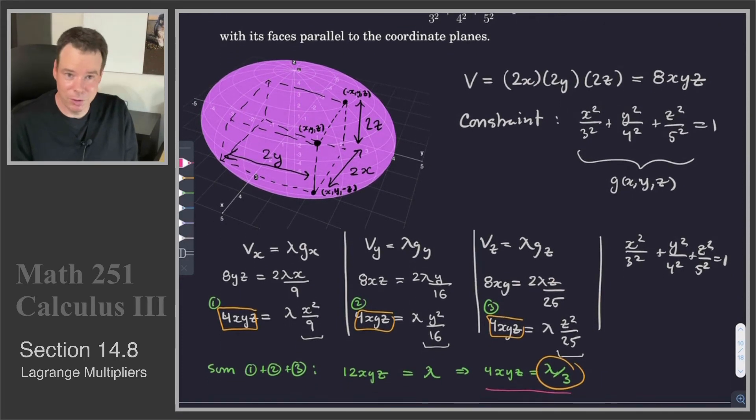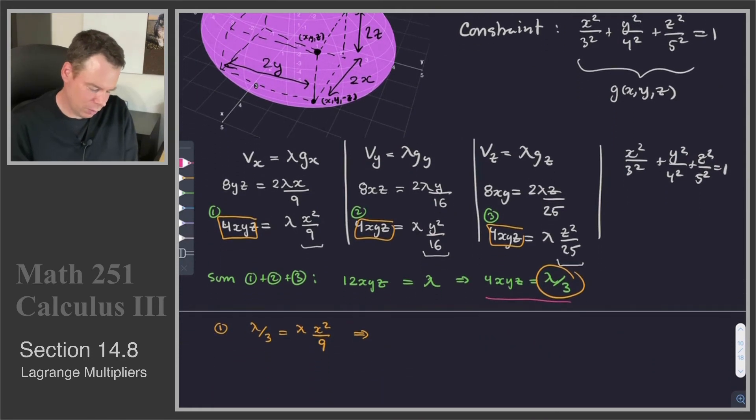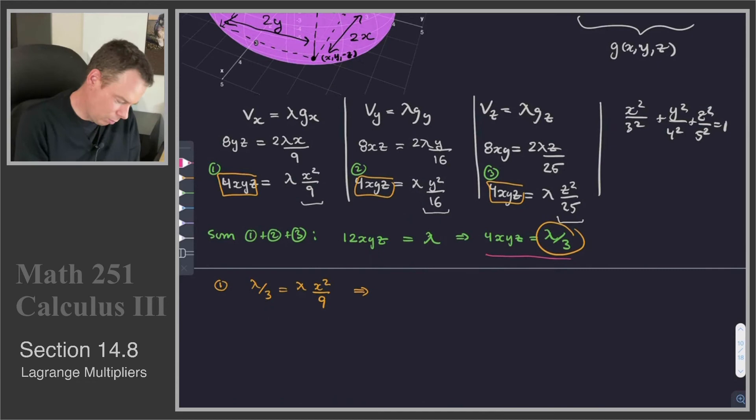So λ = 0 wouldn't give me the maximum volume. So it would give me the minimum volume, so it certainly is a solution. It's not going to give me the maximum volume, and that's what I'm interested in. So what I'll say here is that λ is not 0, because otherwise I wouldn't get the maximum volume. And so that means that I get 9/3, and I'm going to keep it as 9/3. I know I could reduce that to 3, but that's equal to x².